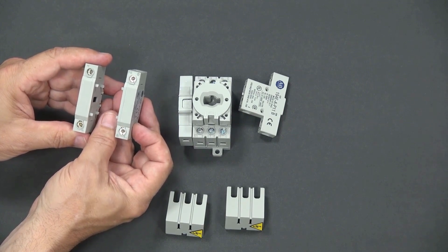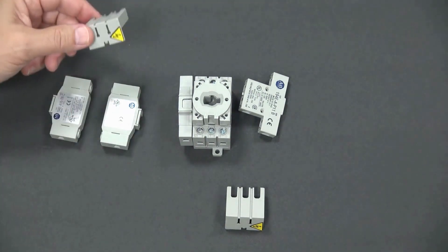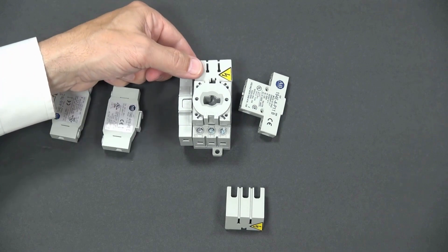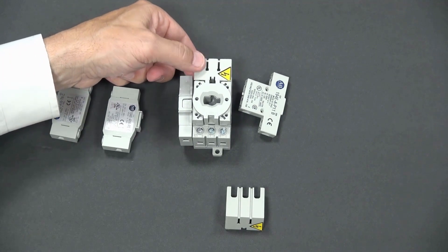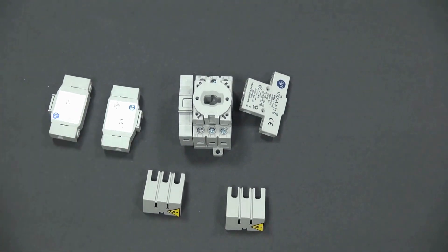Another accessory are the terminal covers. These are sold in sets of two. The terminal cover will provide finger safer IP20 ingress protection. They are available through 100 ampere switches. A good application for a terminal cover is that little panel mounted switch that I discussed earlier.